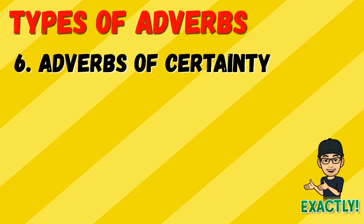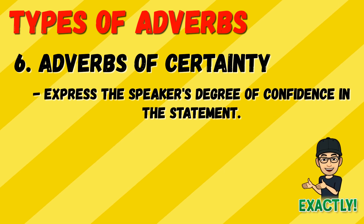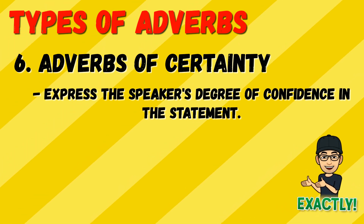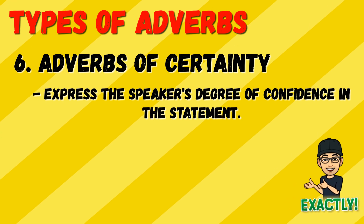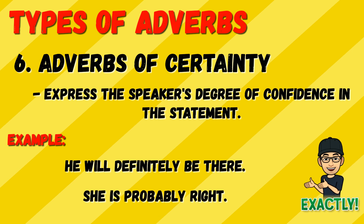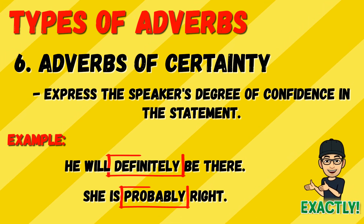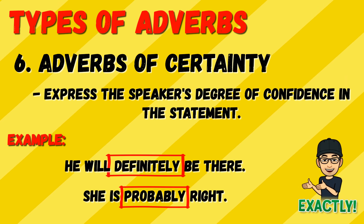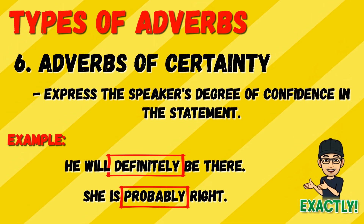The sixth type is adverbs of certainty. These adverbs express the speaker's degree of confidence in a statement. For example: 'He will definitely be there' and 'She is probably right.' Definitely and probably are adverbs of certainty because they describe the level of confidence in the statement.